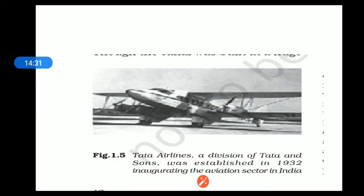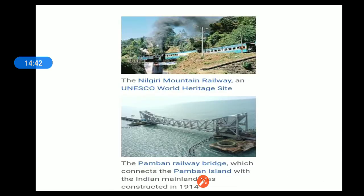Not only railways, but in the British time the aviation sector was also introduced. Tata Airlines is one example. The Nilgiri Mountain Railway, a UNESCO World Heritage Site, was developed by the British. The Pamban Railway Bridge is a very famous bridge which connects Pamban Island with the Indian mainland, constructed in 1914.